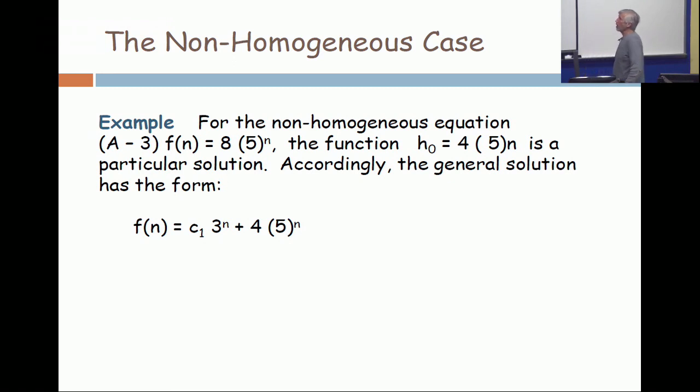All right, we'll start with a non-homogeneous equation: (A - 3)F(n) = 8(5)^n. That's non-homogeneous because the right-hand side is not zero.